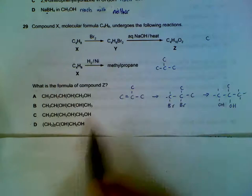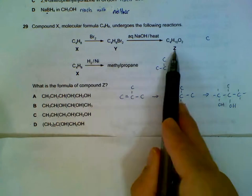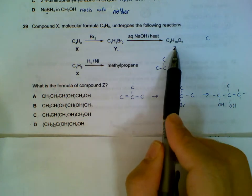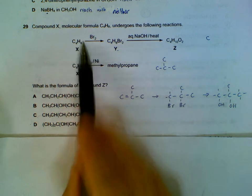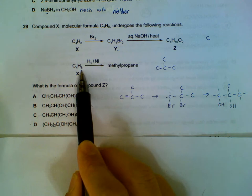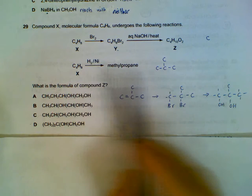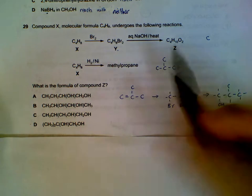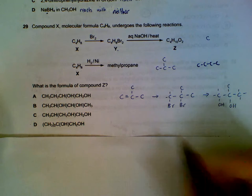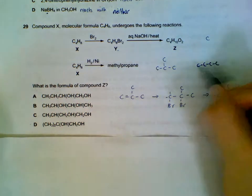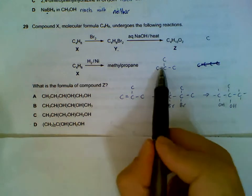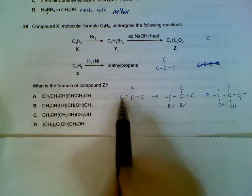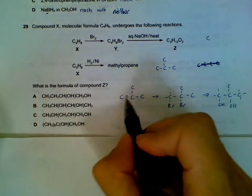Question 29: we have C4H8, and they want you to figure out what it becomes after bromination and then a nucleophilic substitution reaction. The issue is what is the structure of C4H8. That is actually given in the next reaction: C4H8 under hydrogenation will become methylpropane. So we know it is this structure, because it could also have been another structure without this information. Working backwards, there must be a double bond between the centre carbon and one of the terminal carbons. This is the C4H8 we start off with.